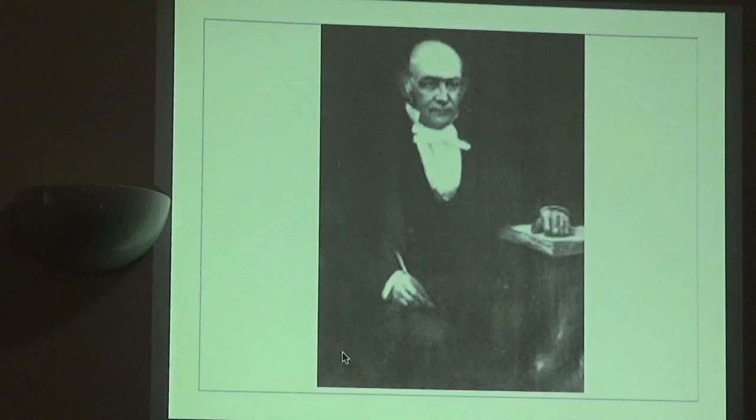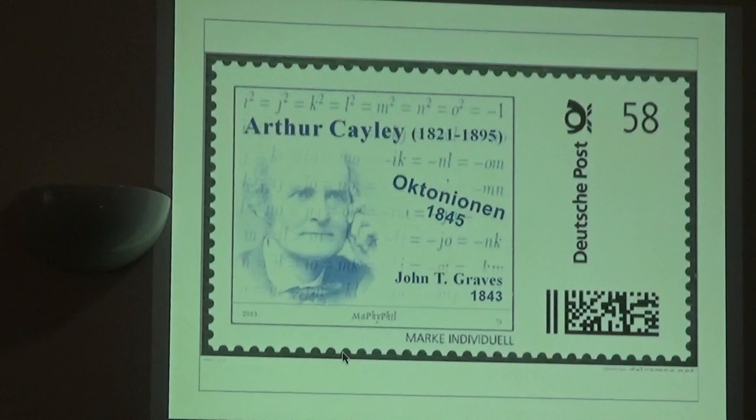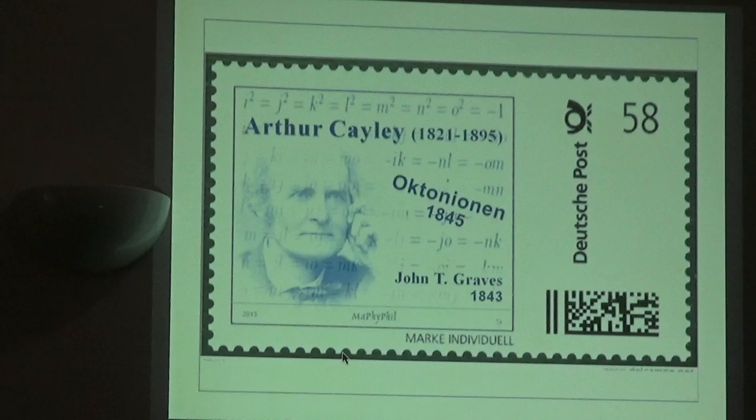and Cayley and Graves discovered the octonions, which are a generalization of the quaternions. Graves in 43—Hamilton communicated to Graves his discovery, and Graves immediately figured out how to double it, doubling construction. Use eight dimensions, use eight dimensions instead of four, write down the algebra that continues to work, has inverses for every non-zero element, but turns out to be non-associative. And I guess Cayley independently discovers it a couple of years later.